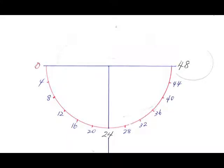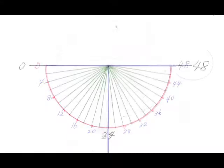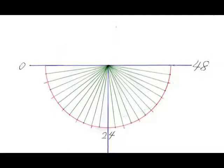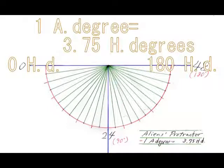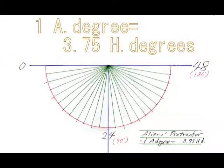Anyway, this is human degrees, so one alien degree is equivalent to 3.75 human degrees.